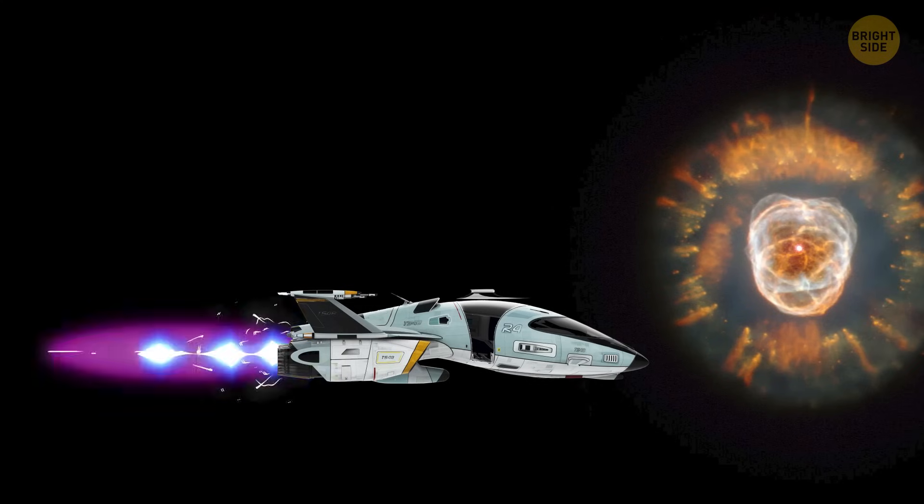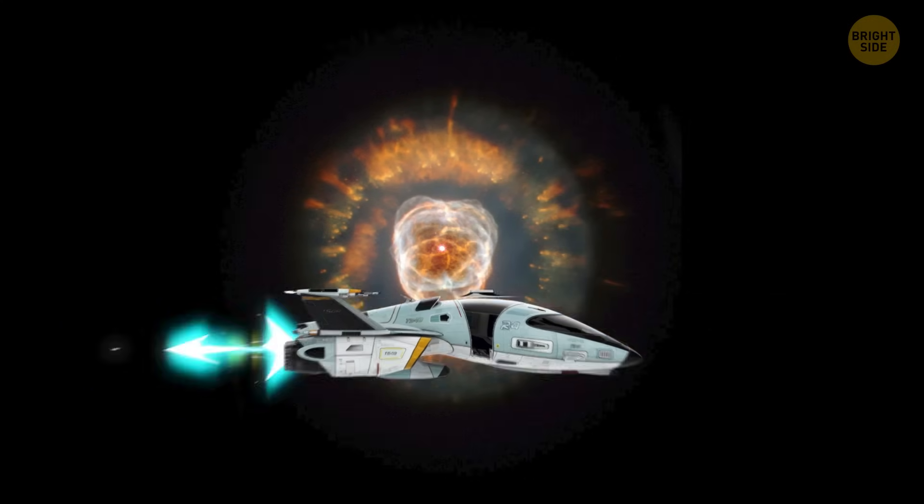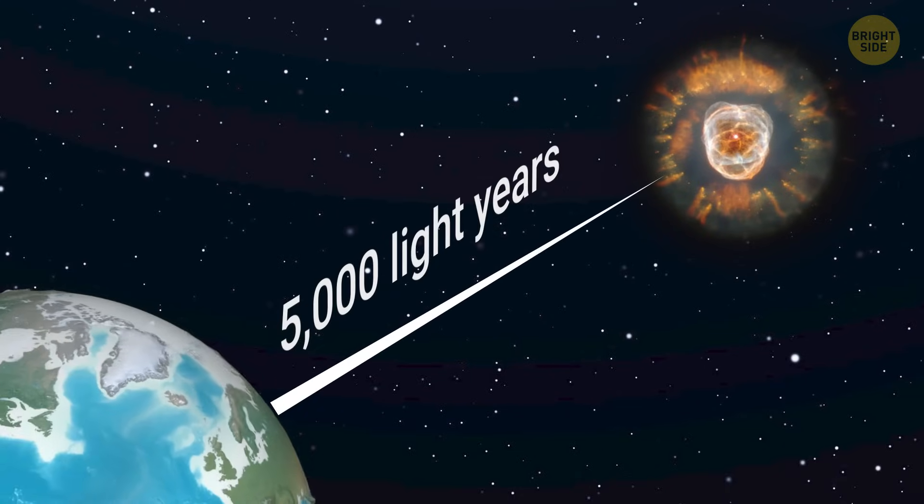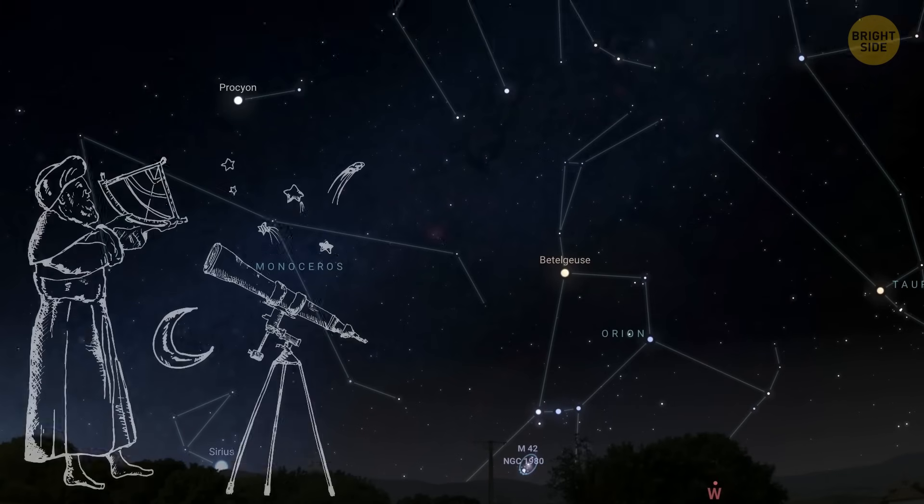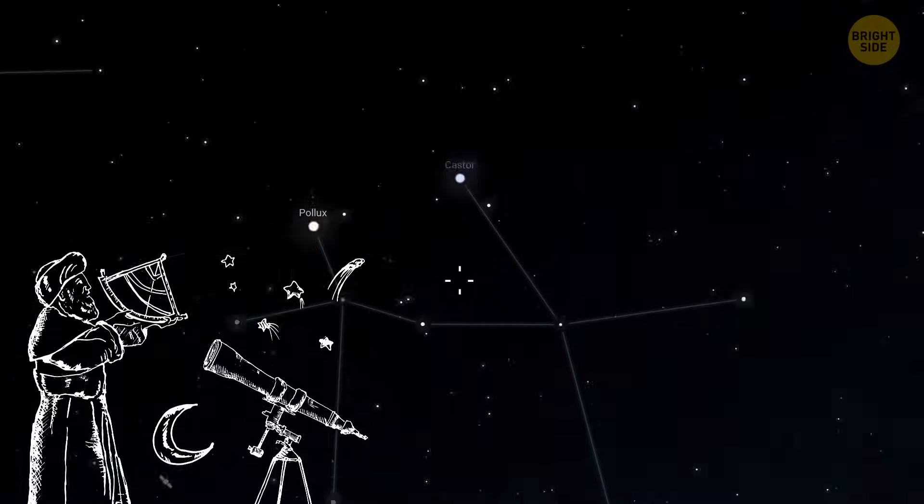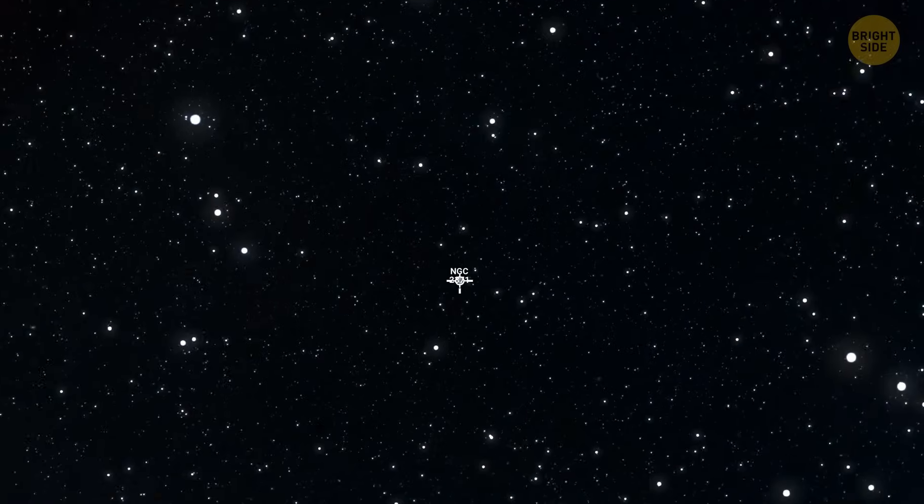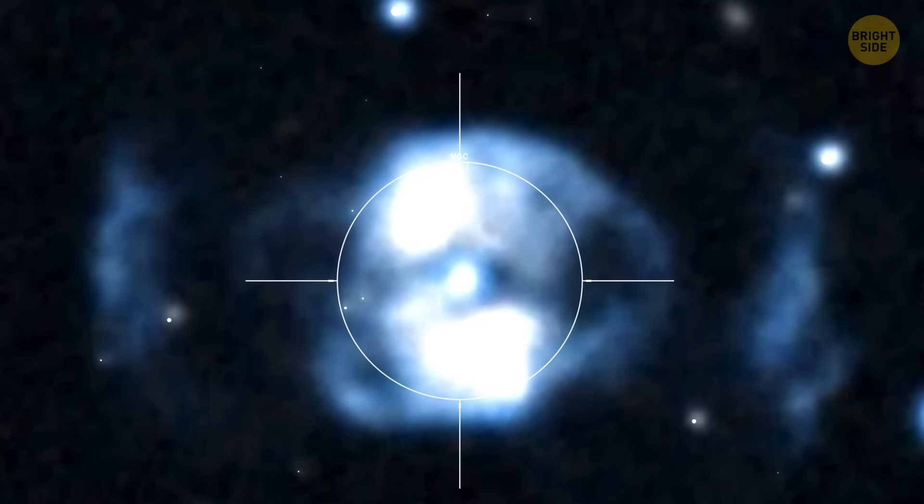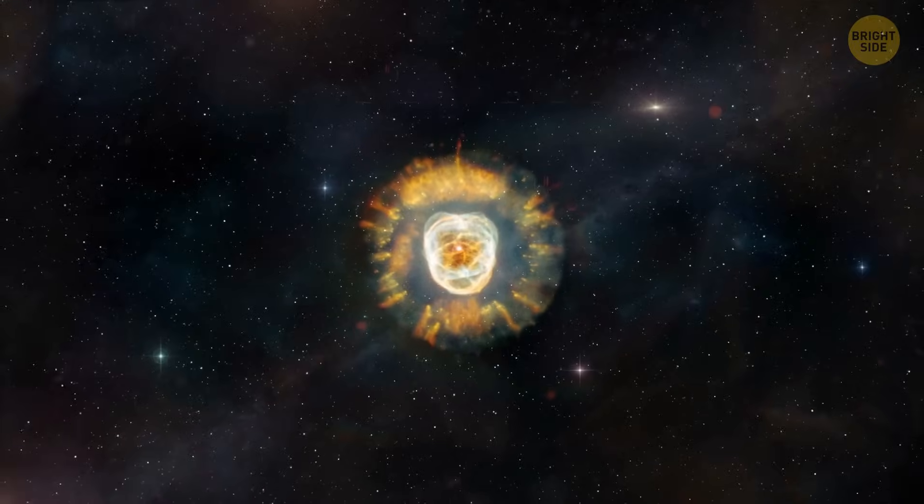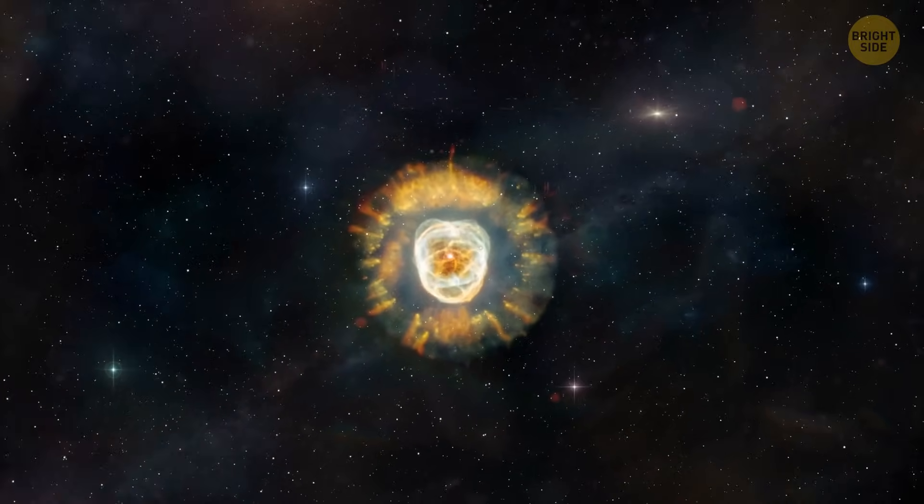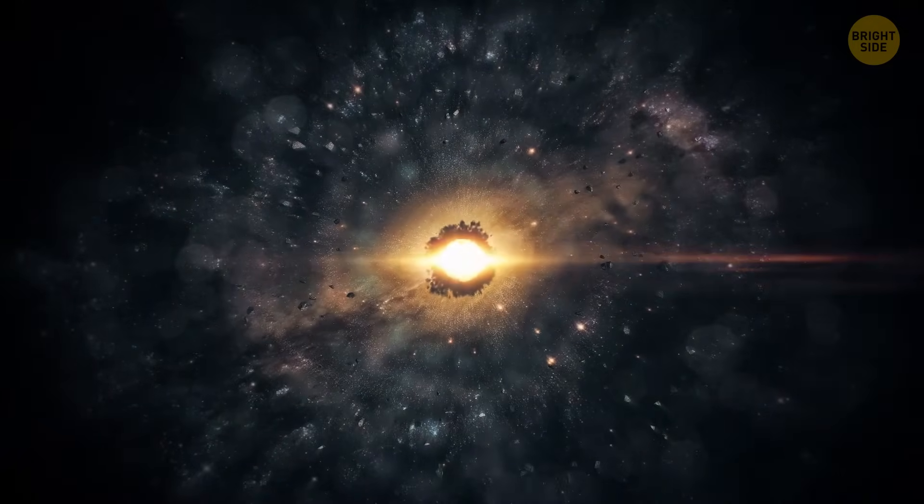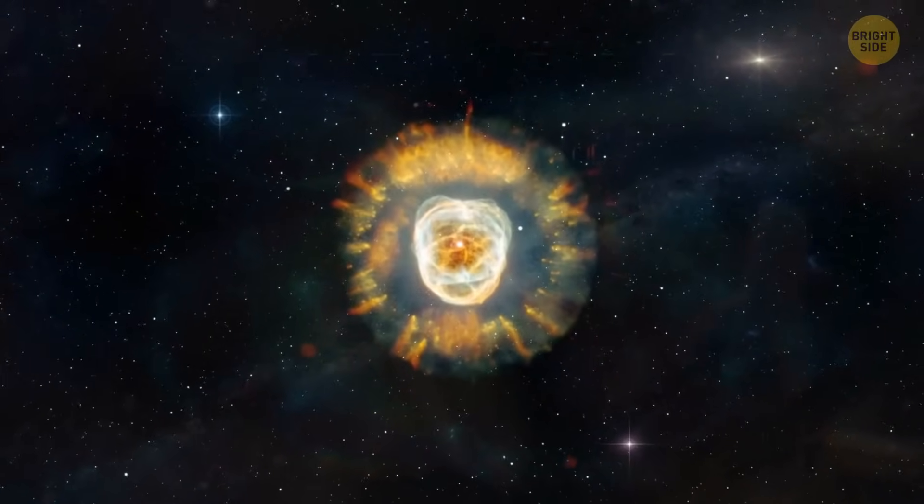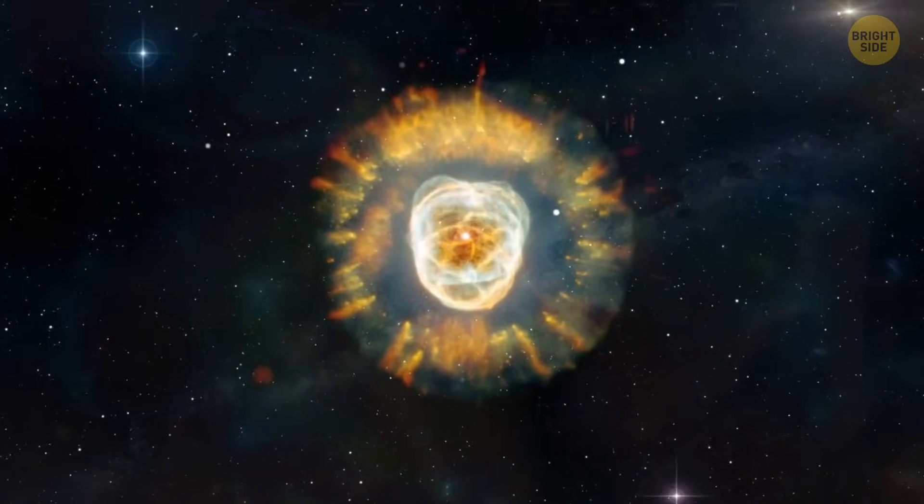The next place you decide to visit is the Eskimo Nebula, 5,000 light years away from Earth in the constellation of Gemini. It was discovered more than 200 years ago and got its name for a reason. Its double shell formation looks like a person's face hidden in a padded hood of a winter jacket. But in reality, this parka is a disk of material with a ring of comet-shaped objects, and the tails of these objects stream away from the star at the center of the Eskimo Nebula.